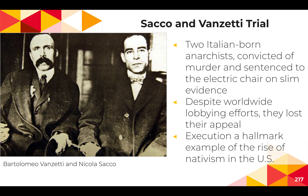They claimed to favor revolutionary change to help the poor and working class, including many immigrants. Anarchism at this time was a relatively popular philosophy; proponents hoped to make radical change that would eliminate the government, which they felt oppressed the poor and cared only about the wealthy. The U.S. government considered Italian anarchists a major threat to national security. Sacco and Vanzetti were tried and convicted on slim evidence.